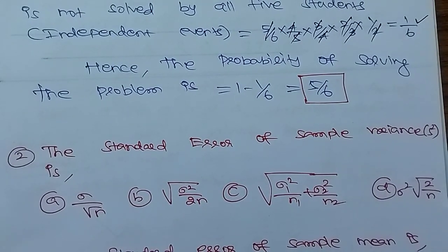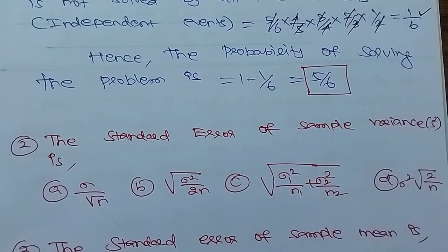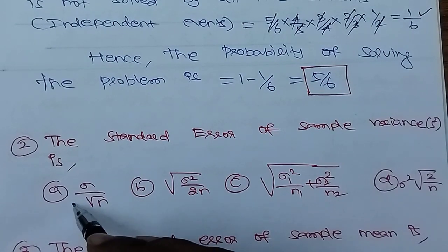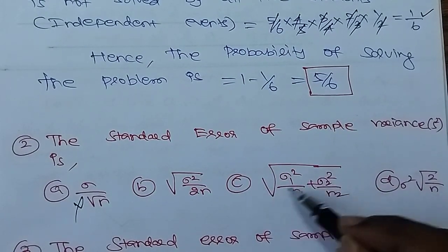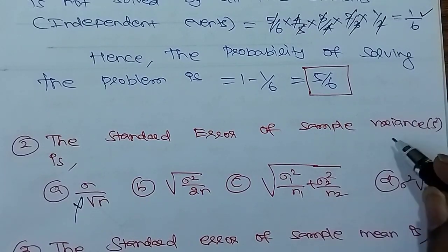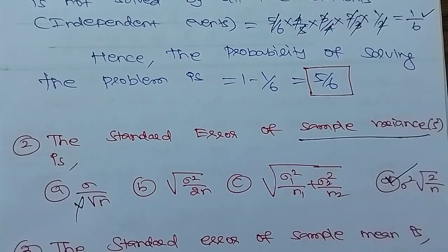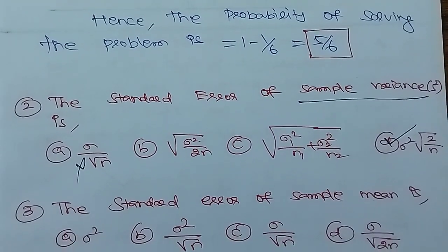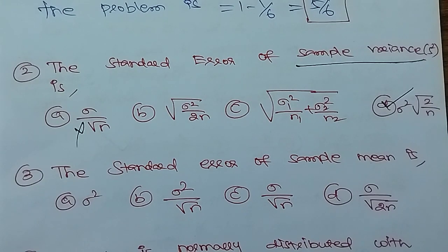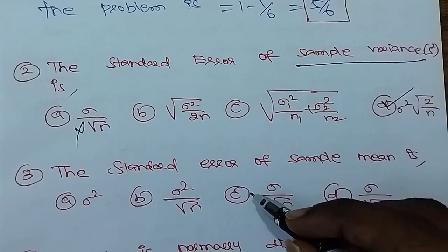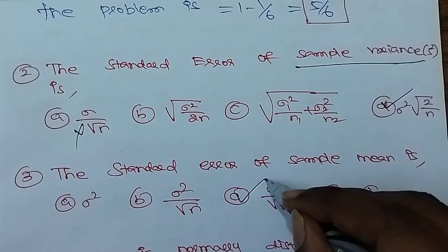Next problem — the standard question. The standard error of sample variance is sigma squared times square root of 2 by n. The standard error of sample mean is sigma divided by square root of n. This is a very standard and repeated question in TNBC exam — standard error of sample mean is sigma by root n.